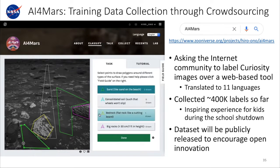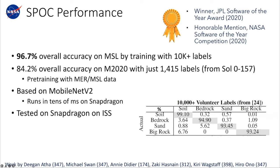Training with this citizen science dataset worked very well, and we are now looking to deploy this onboard — to be the first deep neural network on Mars.